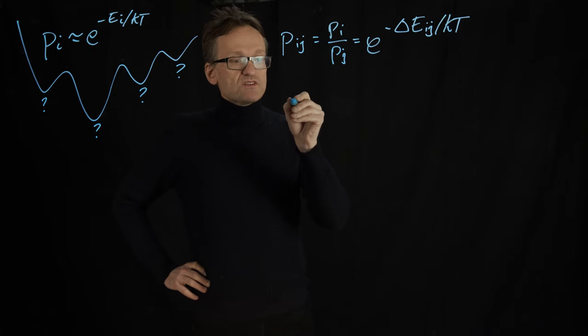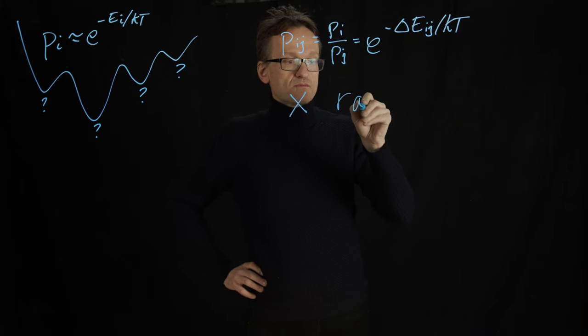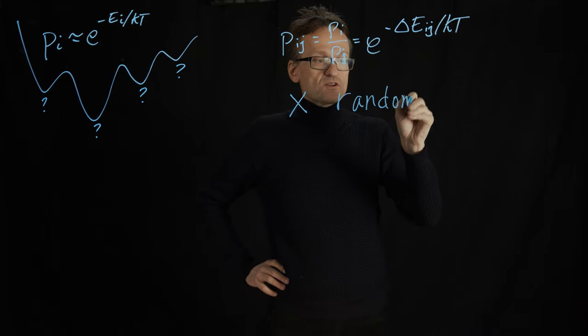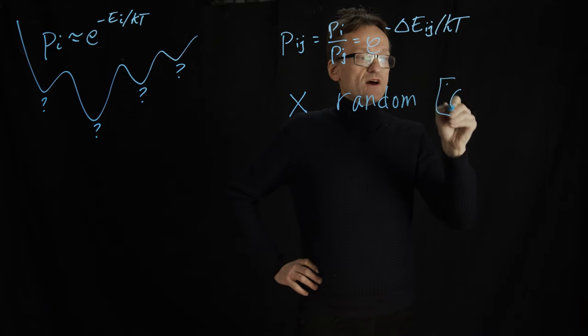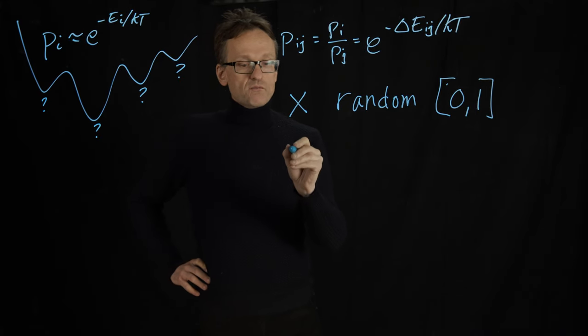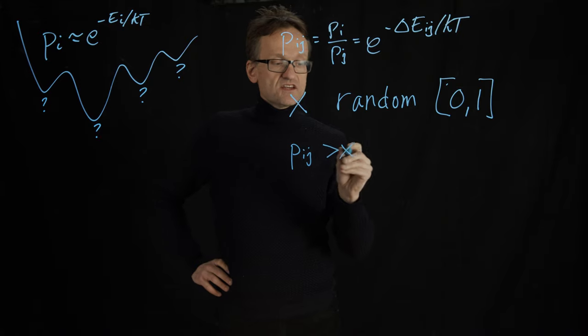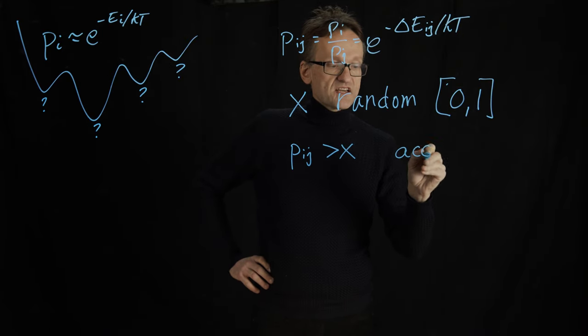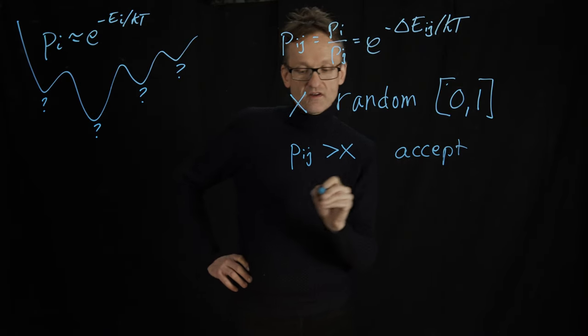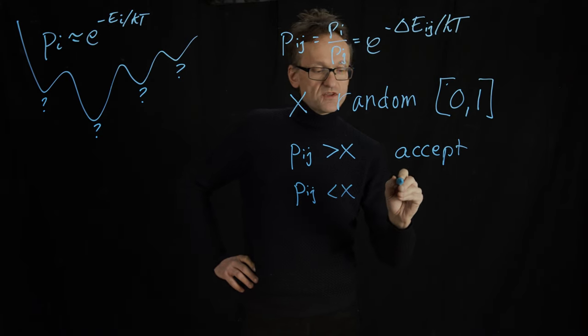That sometimes you decided by drawing a random number x. I don't think you called it x but I need to call it something. It's a uniform random number in the range 0 to 1. And then we compare that Pij to x. If Pij is greater than x we always accepted the so-called move, and if Pij was smaller than x we rejected the move.